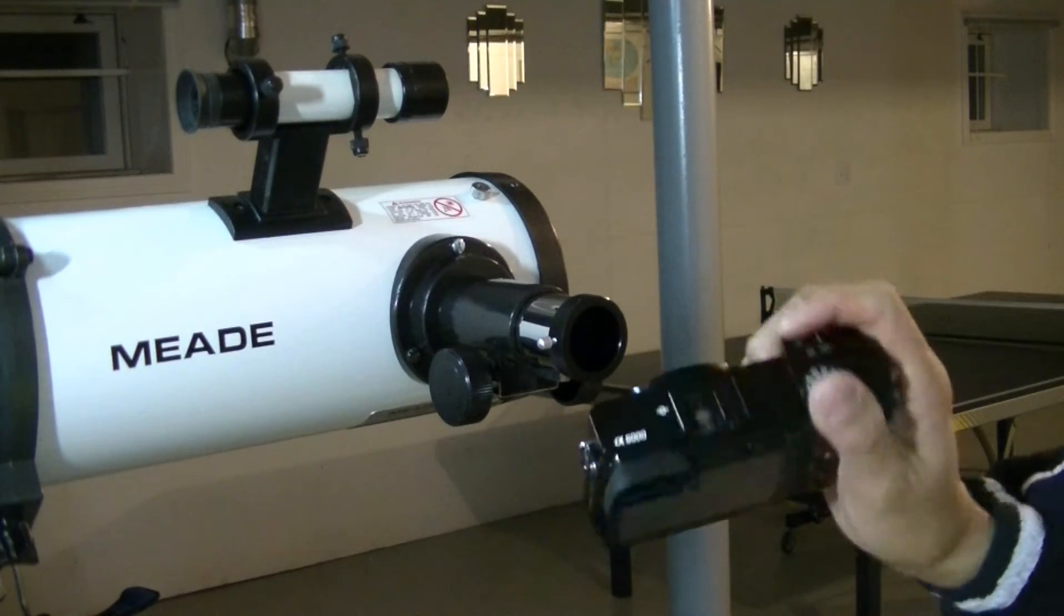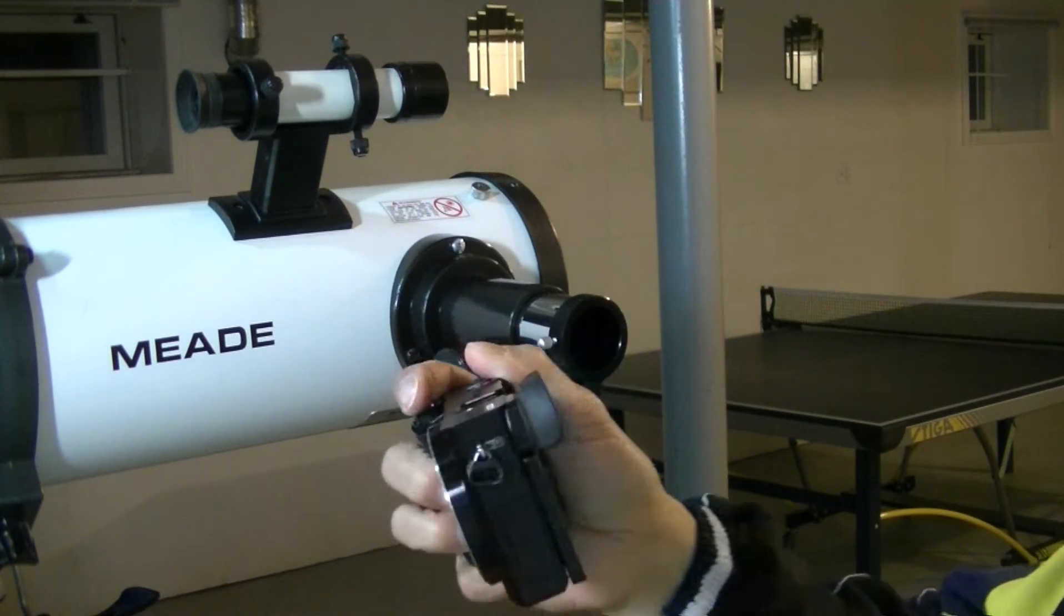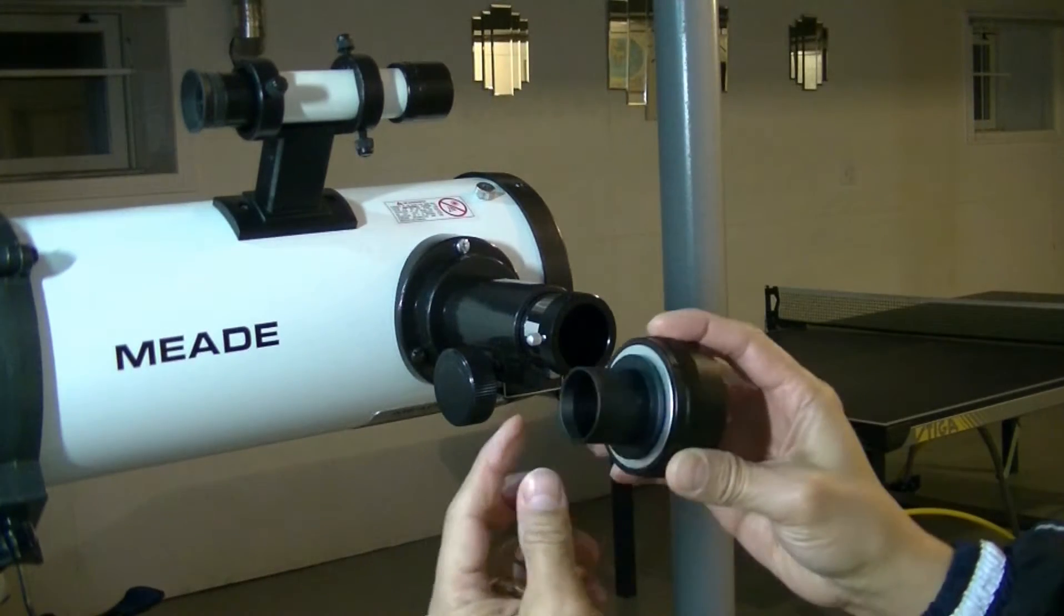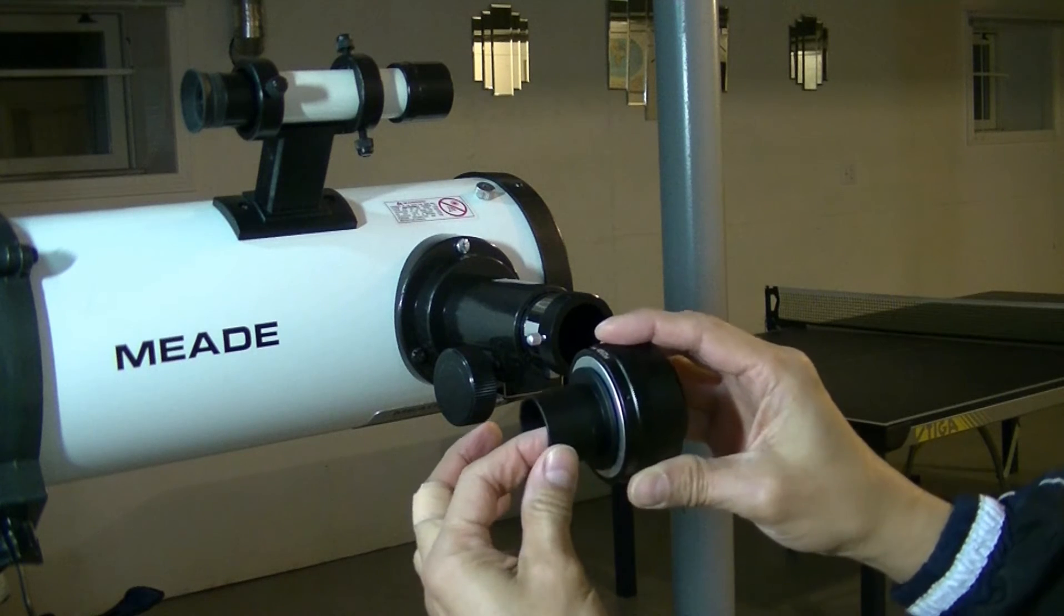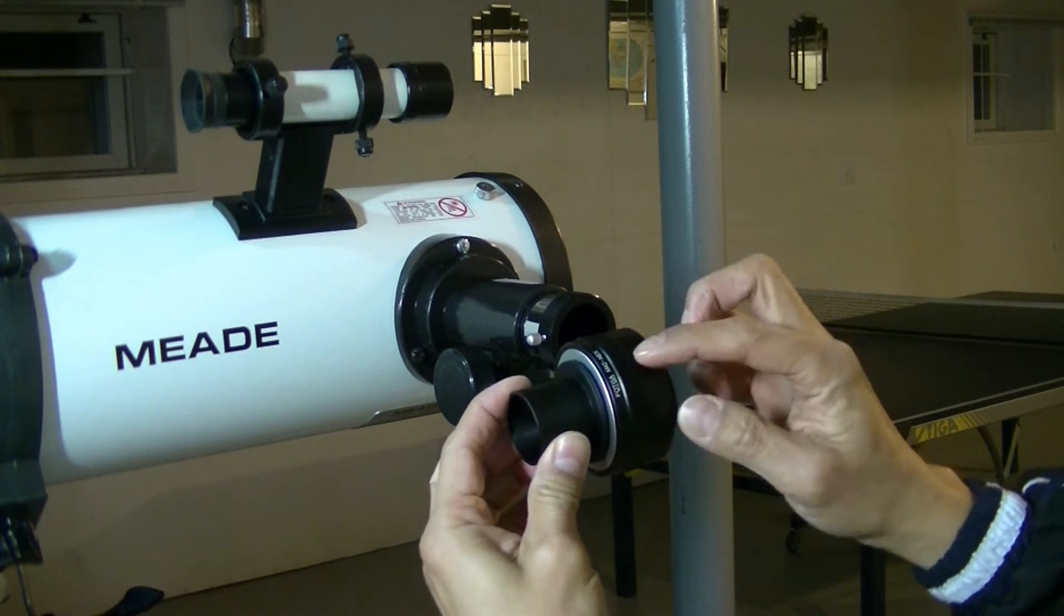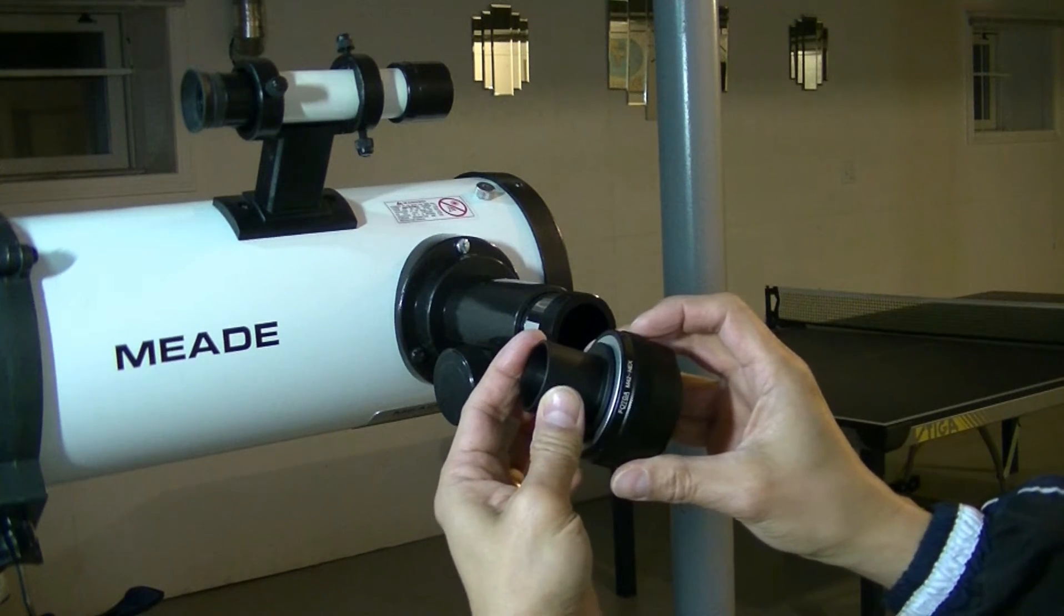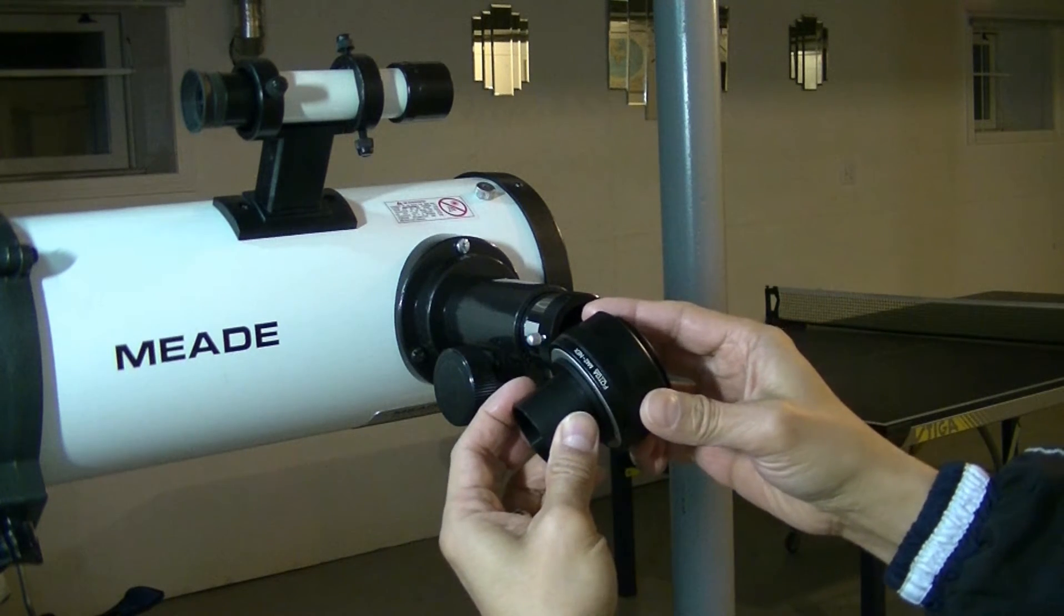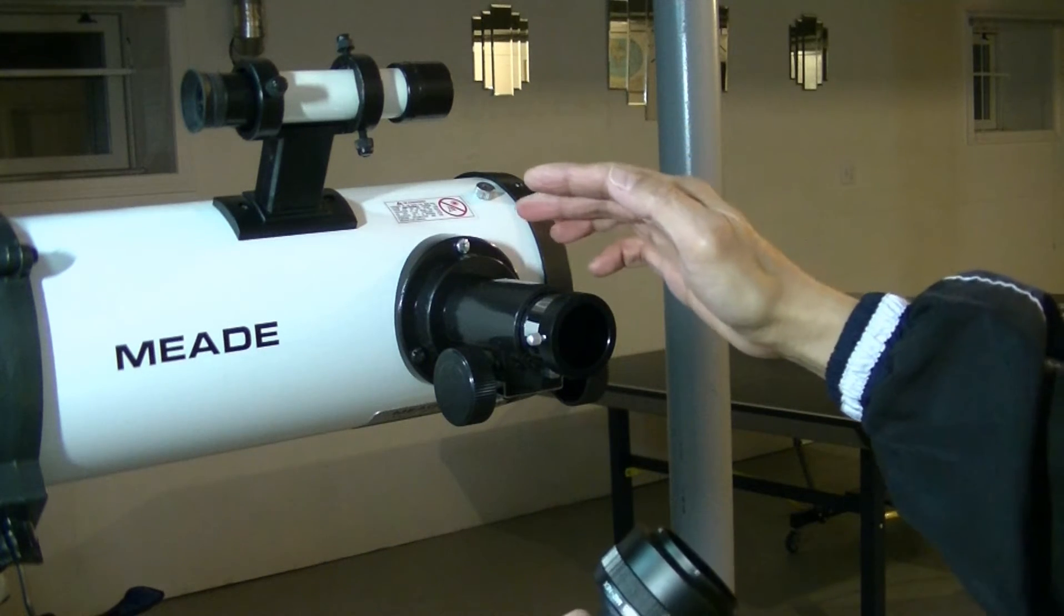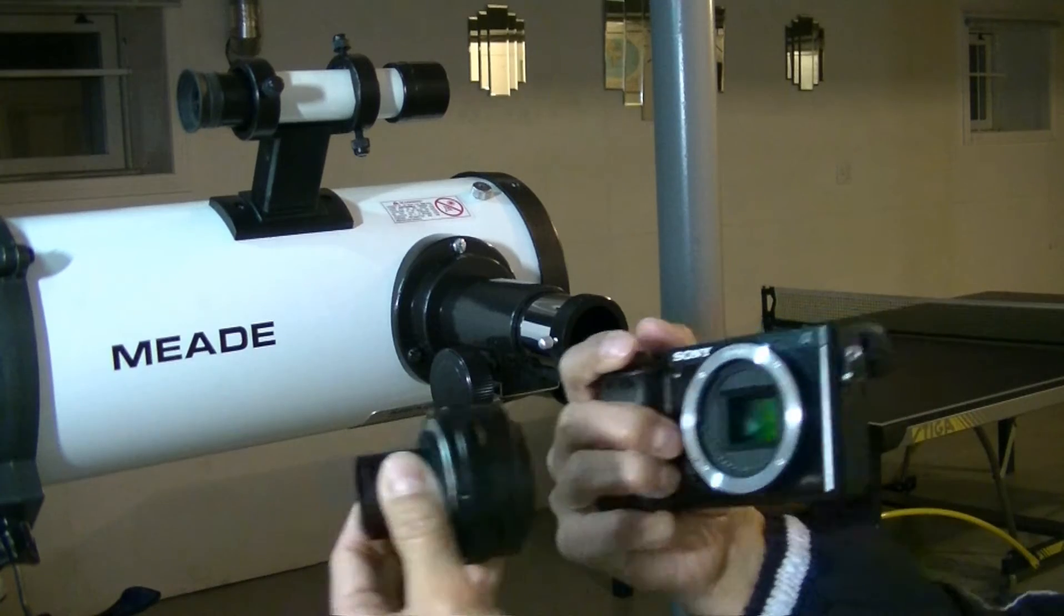This is my Sony A6000 mirrorless camera. I bought this T adapter from Amazon.com for $18, this M42 to E mount adapter from Amazon.com for about $10, and the focuser from eBay for $18.